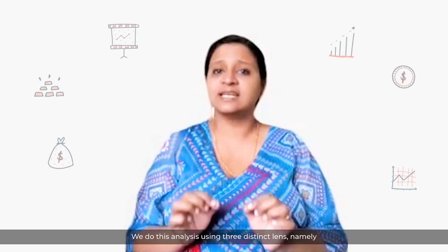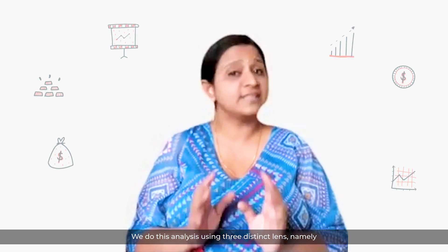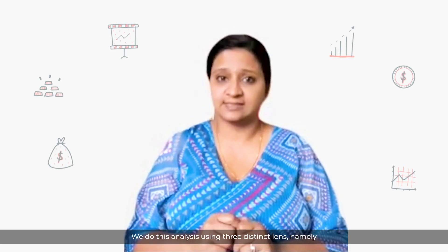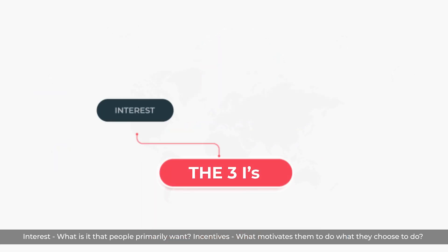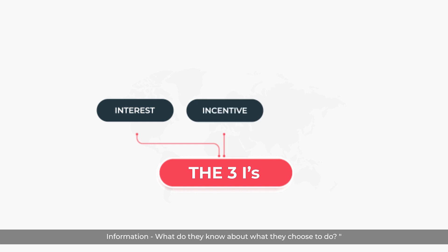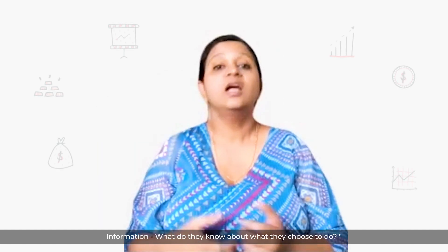We do this analysis using three distinct planes. Namely: 1. Interest — what is it that people primarily want? 2. Incentives — what motivates them to do what they choose to do? 3. Information — what do they know about what they choose to do?